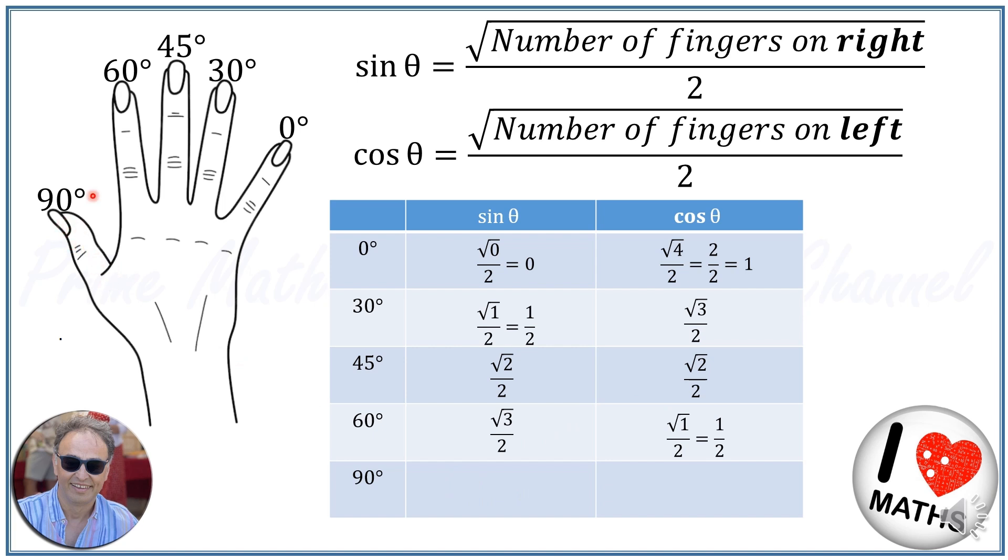Let's try sine and cosine of 90 degree. There are four fingers on the right hand side, so sine of 90 degree is square root of 4 over 2, or 2 over 2, which equals 1. And there is no finger on the left hand side, so cosine of 90 degree is square root of 0 over 2, or simply 0.